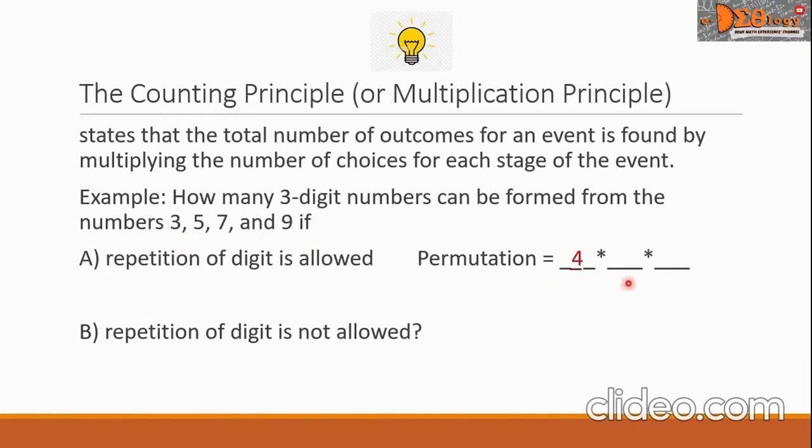For the second blank, since repetition of digit is allowed, there will be four choices again. For the third blank, and repetition is allowed, there will be four choices also. And then, let us multiply these numbers. Four times four times four. And the answer is 64. There are 64 three-digit numbers.